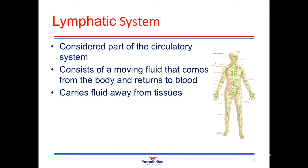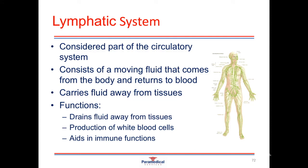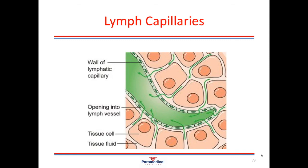The main functions of the lymphatic system are to drain fluid away from the tissues, clean that fluid, and put it back into the circulatory system. It's also heavily involved in the production of white blood cells and aids in our immune system functions. This is a picture of a lymph capillary.